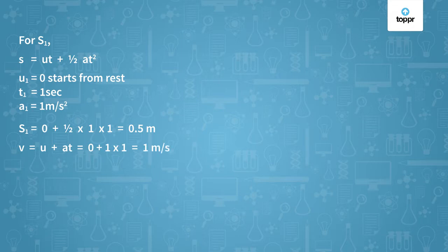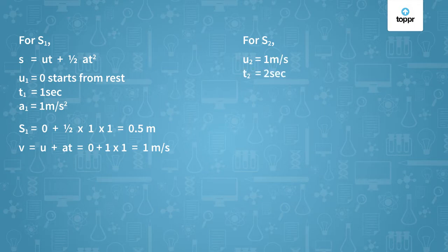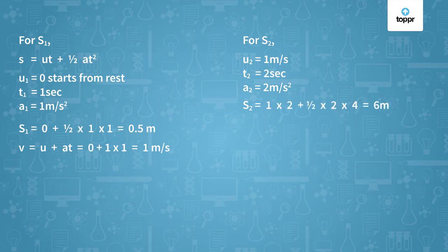Now let's look at scenario 2. The initial velocity is the final velocity of scenario 1, so U is 1 meter per second. T, as mentioned in the question, is 2 seconds, and the acceleration value is 2 meters per second squared. The distance traveled in scenario 2, S2, comes out to be 6 meters.